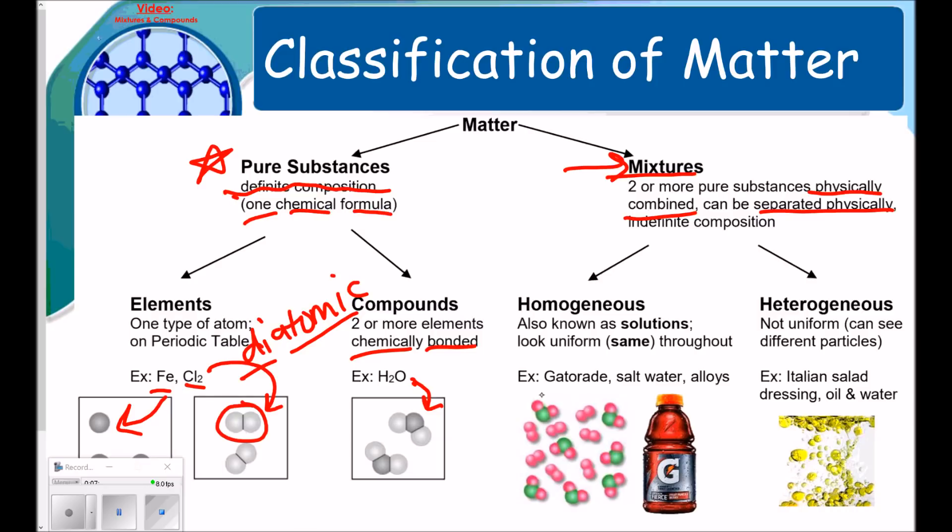Homogeneous also are known as solutions, meaning they look uniform or the same throughout. Our examples are things like Gatorade, salt water, and different alloys. Salt water, they commonly call saline solution. Hence, solution being the same as homogeneous. If you look at the picture on a molecular level, you can see here we have a water molecule, and here we have some other stuff. So this is a physical mixture. Two different things combined.